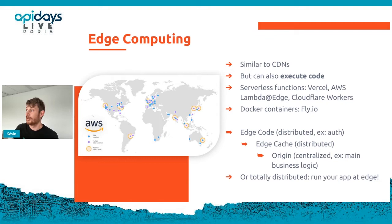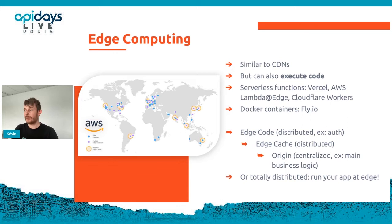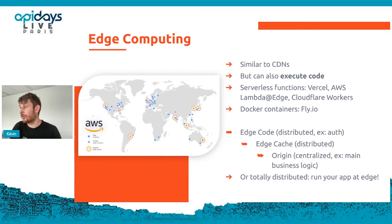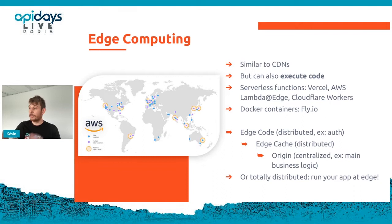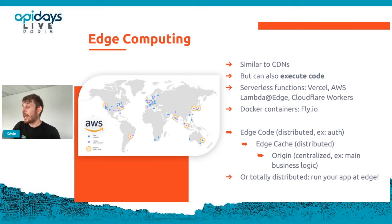These platforms also allow running code at the edge — quite new. Providers like Vercel, AWS Lambda@Edge, or Cloudflare Workers allow you to execute your application code in a distributed fashion directly on edge servers as close as possible to the end user. You can also use Fly.io to run Docker containers in a distributed fashion. You have two ways: deploy your whole app to run at edge in a distributed fashion, or use a centralized server with an edge cache in front of it and run some code like authentication at edge.